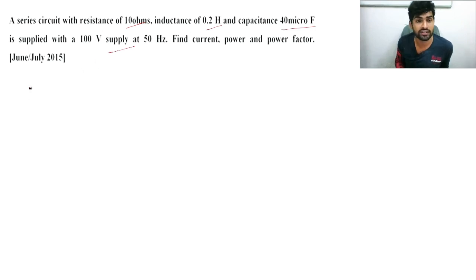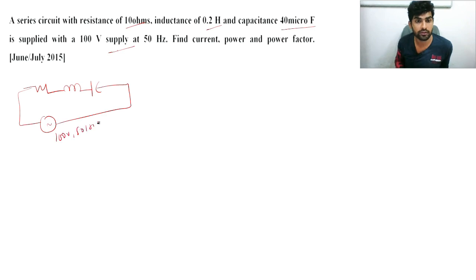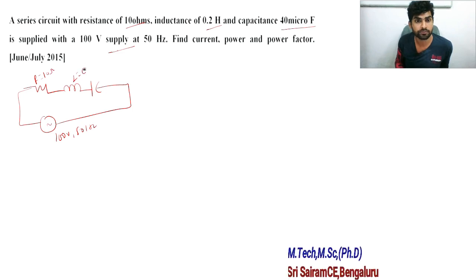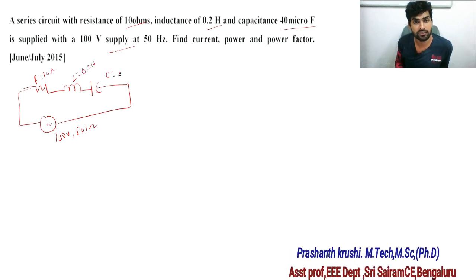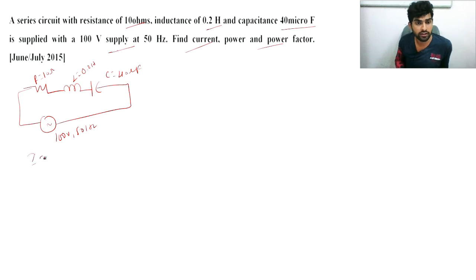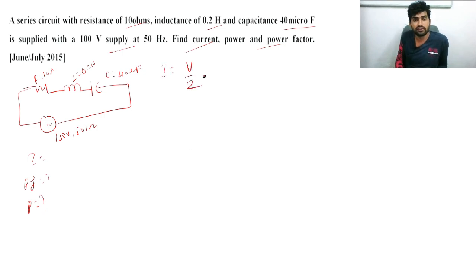It's a series circuit — R, L, and C are connected in series as mentioned in the question. Supply voltage is 100 volts, 50 hertz. R value is 10 ohm, L value is 0.2 henry, and C value is 40 microfarad. What we need to find: current I, power factor, and power. The formula for I is V divided by Z.